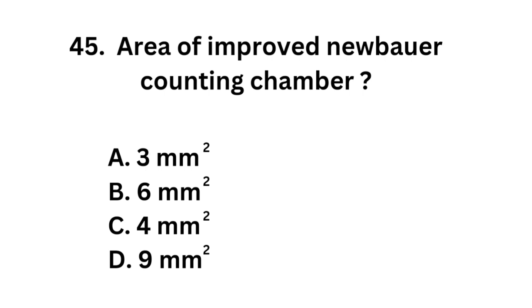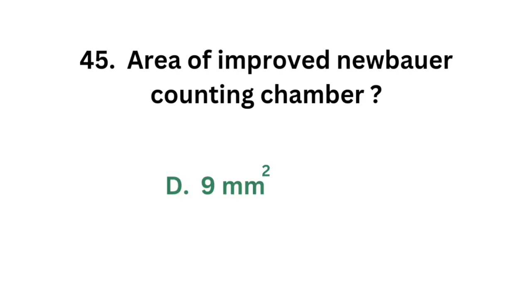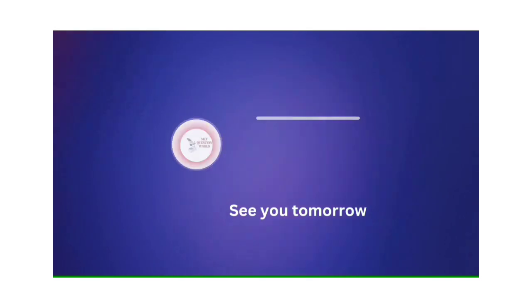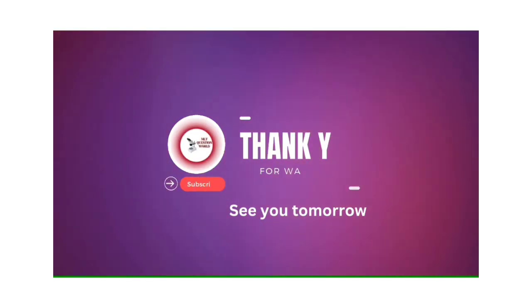Question number 45: Area of improved Neubauer counting chamber. Option A: 3 mm². Option B: 6 mm². Option C: 4 mm². Option D: 9 mm². The correct answer is option D: 9 mm². Area of improved Neubauer counting chamber is 9 mm². Thank you for watching, see you tomorrow.